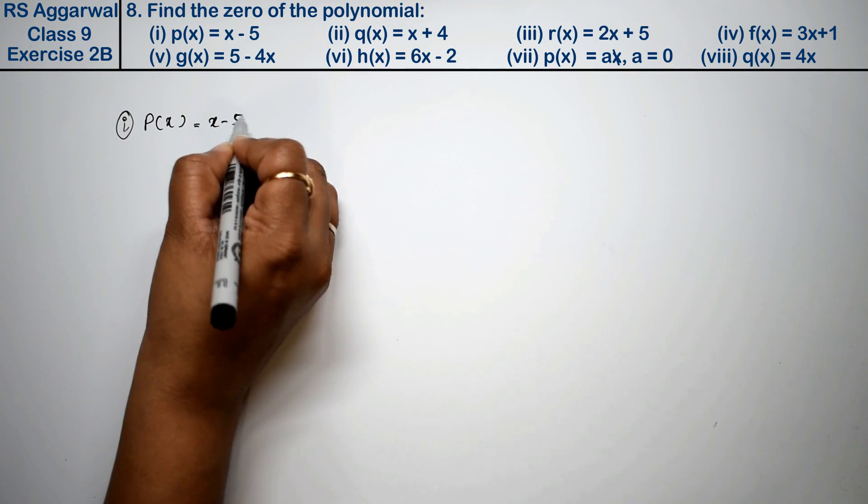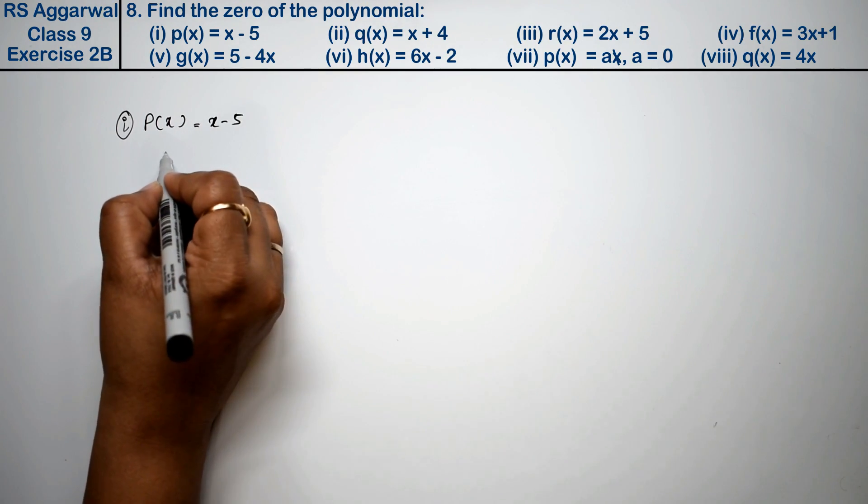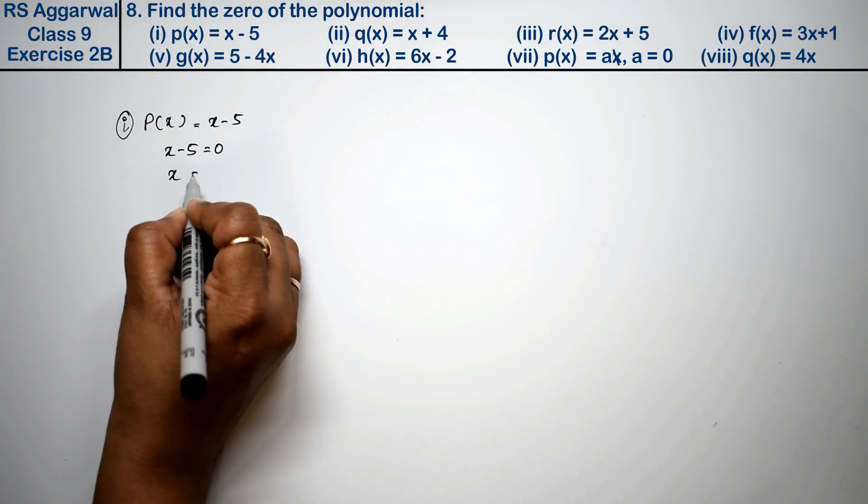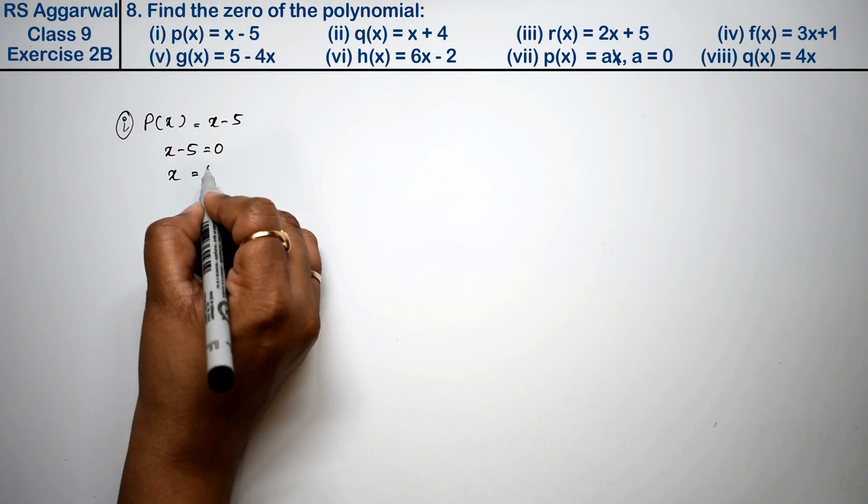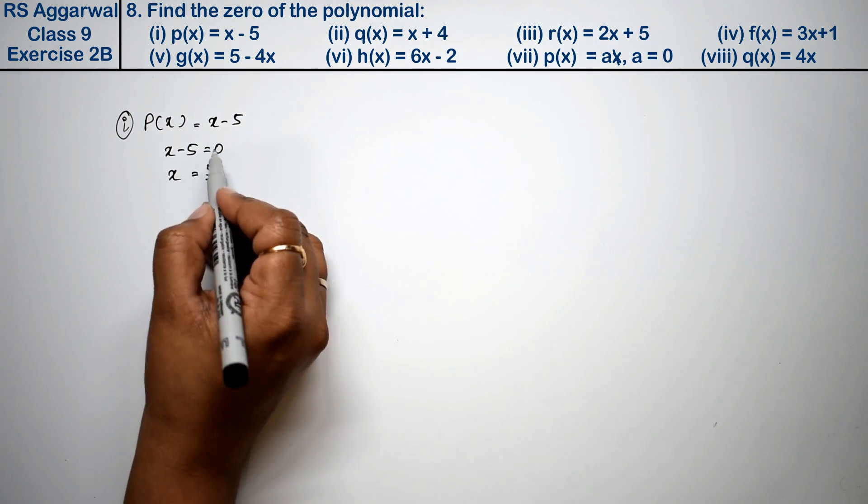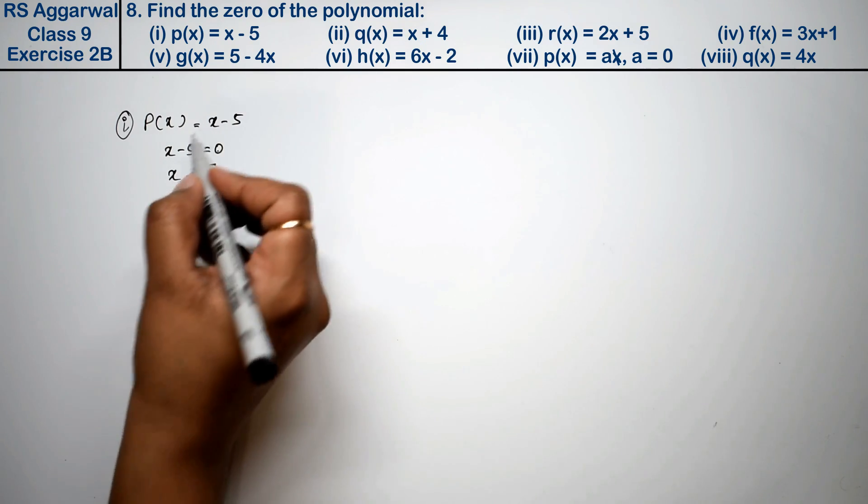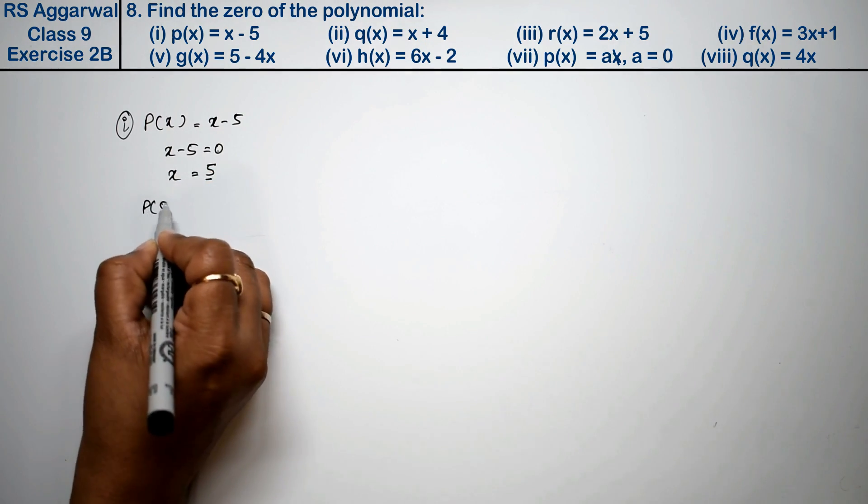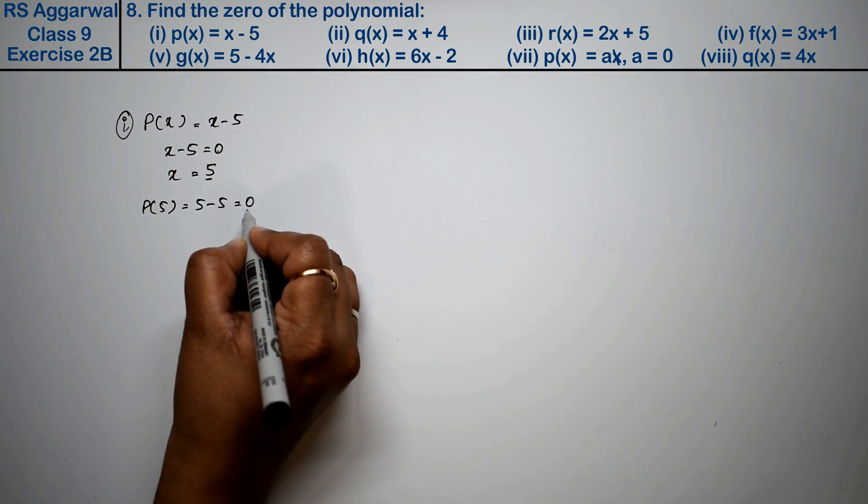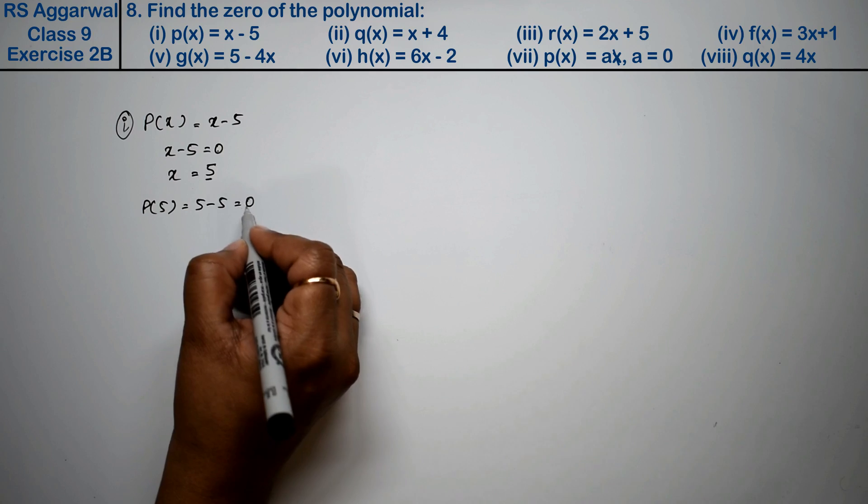To find the zero of the polynomial, set x minus 5 equals to 0. What will be the value of x? Minus moves to the other side and becomes positive, so x equals 5. If I put x equals 5, then 5 minus 5 equals 0. This means we need to find which value of x makes the polynomial equal to zero. The answer is 5 for the first part.